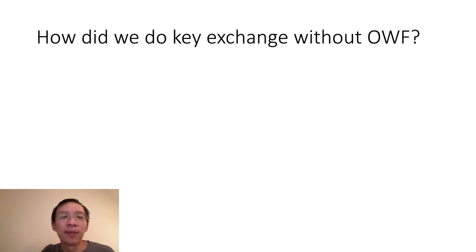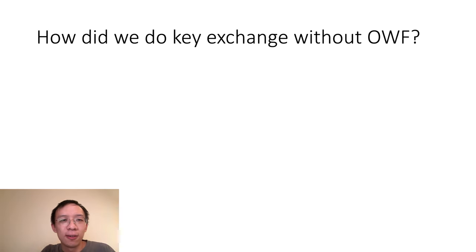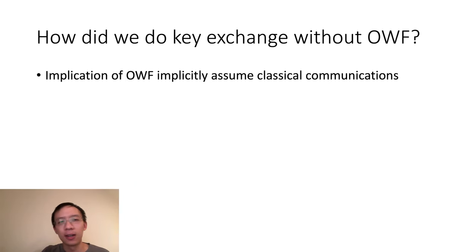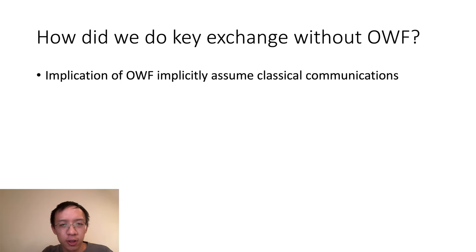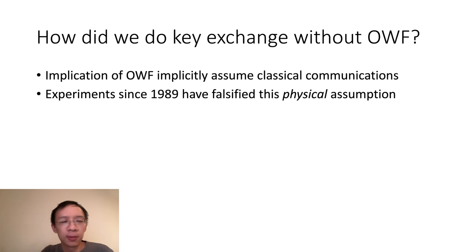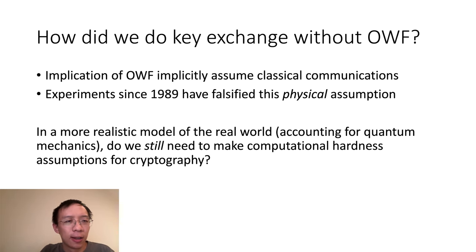So all of this is great, but let's connect this to the question I raised at the beginning: why do we need hardness assumptions? We thought that key exchange would require computational assumptions, and yet we were able to do key exchange without the existence of one-way functions. How did we manage to do that? It turns out that if you open up the proof of how you construct a one-way function from key exchange protocols, it actually implicitly assumes that all parties only have classical communication channels. However, these experiments since 1989 have clearly falsified this physical assumption. Therefore, a natural question arises.